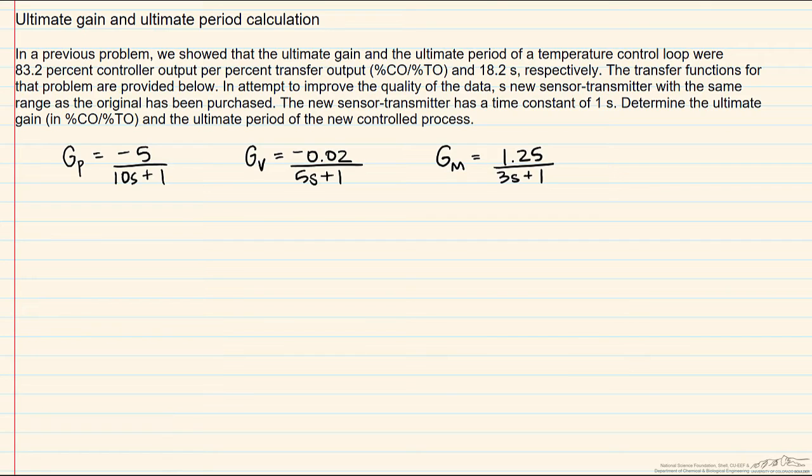In a previous screencast we did an analysis of a temperature control loop which showed that the ultimate gain and ultimate period were 83.2% control output per percent transfer output for the ultimate gain and 18.2 seconds for the ultimate period.